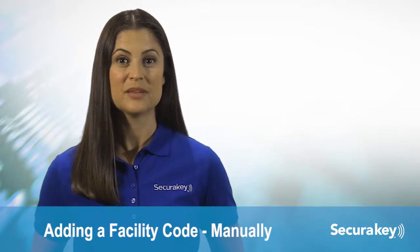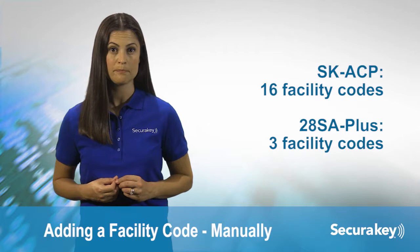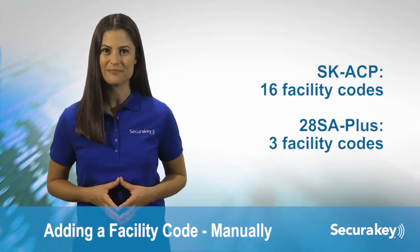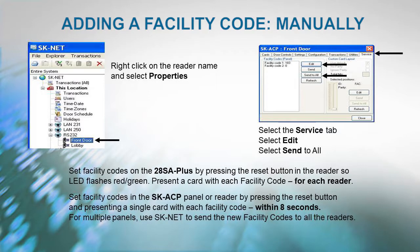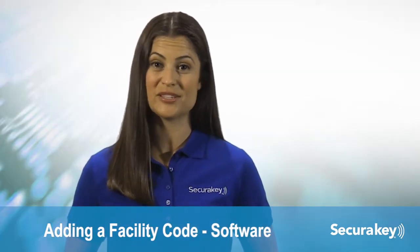The SKACP can learn up to 16 facility codes. While it is best to have a single facility code, it is not always convenient. To add a facility code by having the reader learn it: right-click on the reader name and select Properties, select the Service tab, select Edit, then select Send to all. If you know what the facility code is, you can add it from the software: right-click on the reader name and select Properties, select the Service tab, then select Edit.